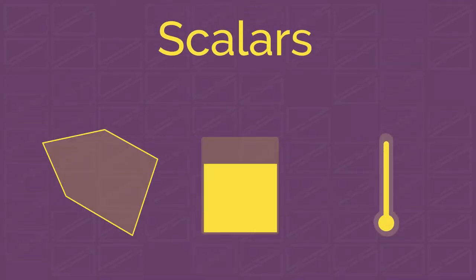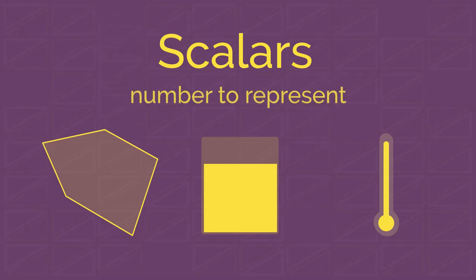Physical properties like area, volume and temperature are scalars, since we only need a number to represent them.